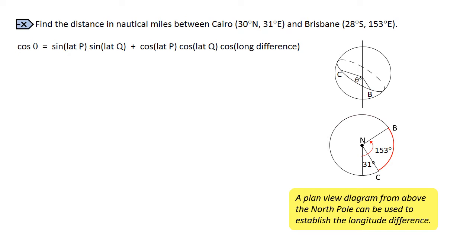To find the longitude difference in this case, we'll need to subtract the two longitudes. 153 degrees minus 31 degrees equals 122 degrees.